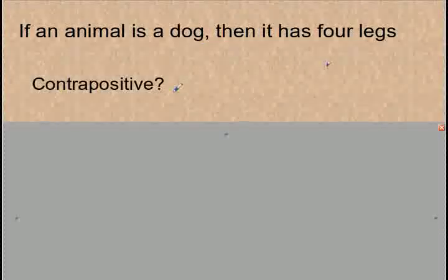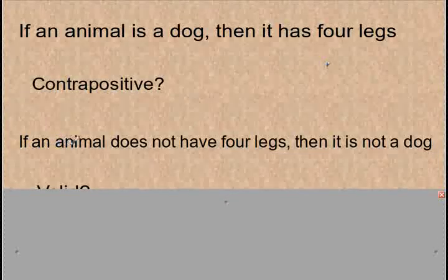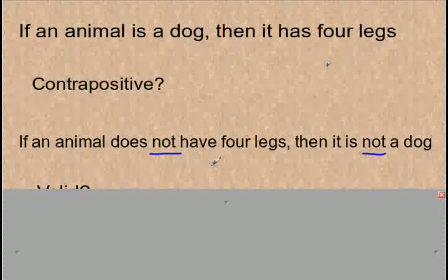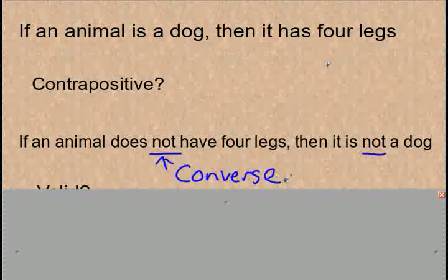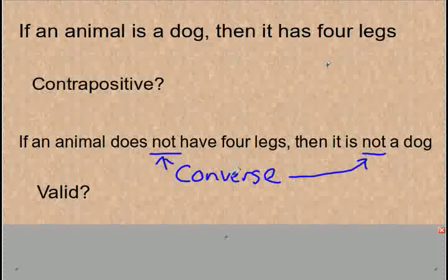The next one is the contrapositive. If an animal is a dog, then it has four legs — the contrapositive would be: If an animal does not have four legs, then it is not a dog. You should notice that it is similar to the converse, but you also add in the 'nots' — you make the if and the then of the converse negative. So if you can write the converse of a statement, you should be able to write the contrapositive.